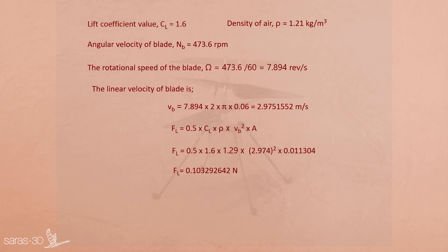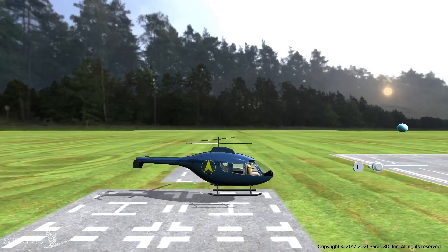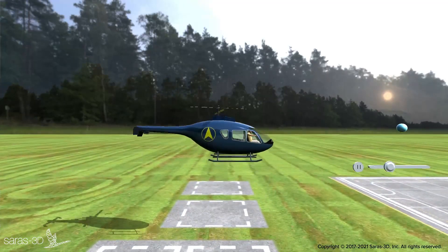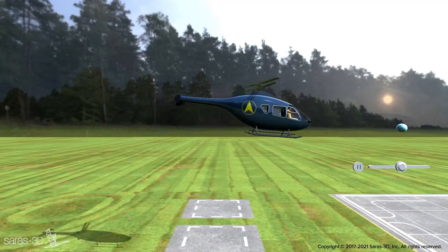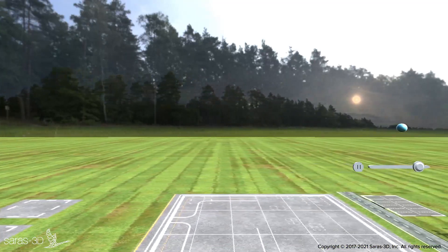Combining the lift force for the two rotor discs, the overall lift force acting on the helicopter comes out to 0.2065 newtons, whereas the weight of the helicopter is 0.198 newtons. Since the lift force is more than the weight of the helicopter, the helicopter will be lifted up on Earth.